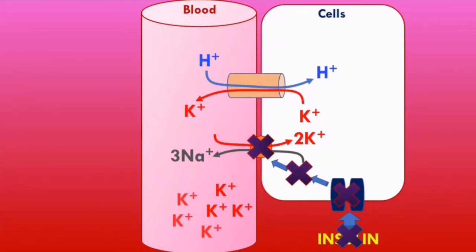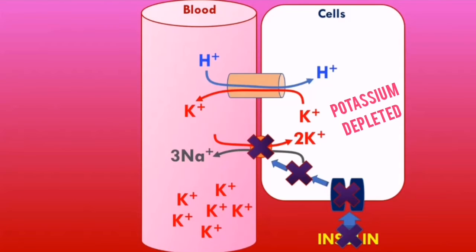The big problem with this H+/K+ exchange mechanism is that potassium is being shifted from the cells to the blood, further increasing serum potassium levels. But even though serum potassium is increasing, the potassium inside the cells is decreasing — so patients are actually becoming potassium depleted.